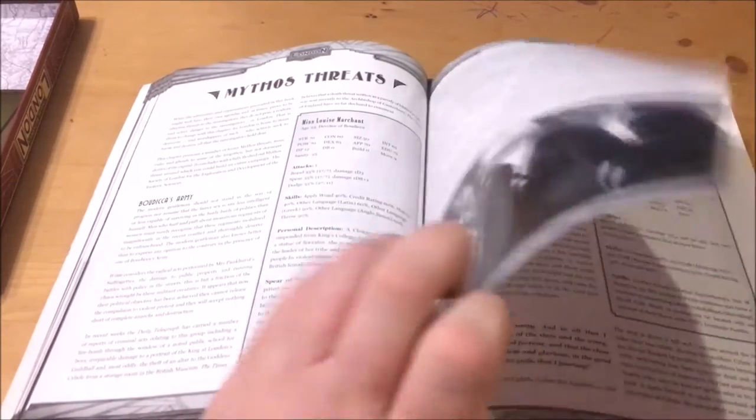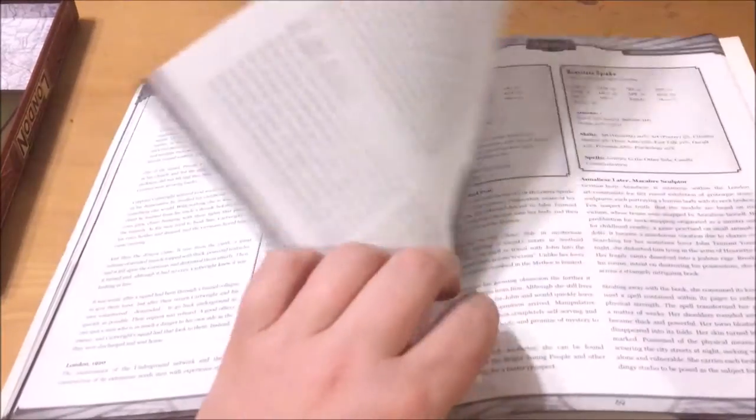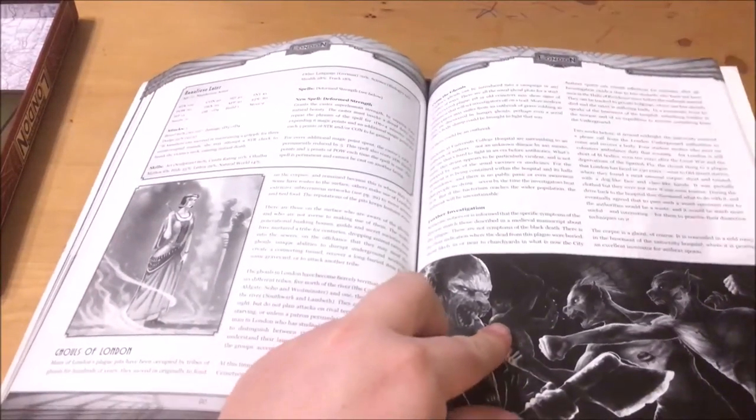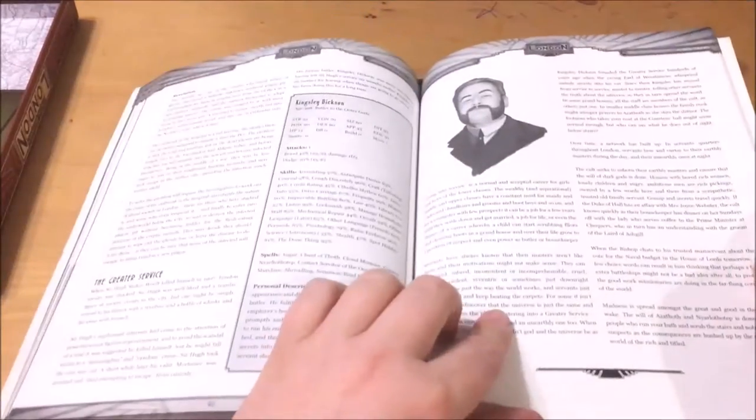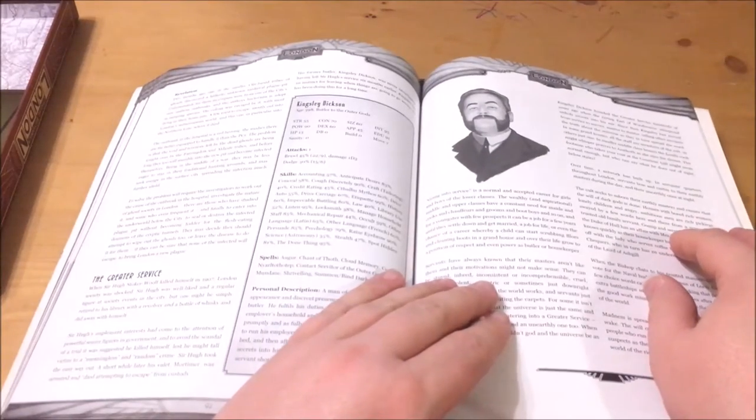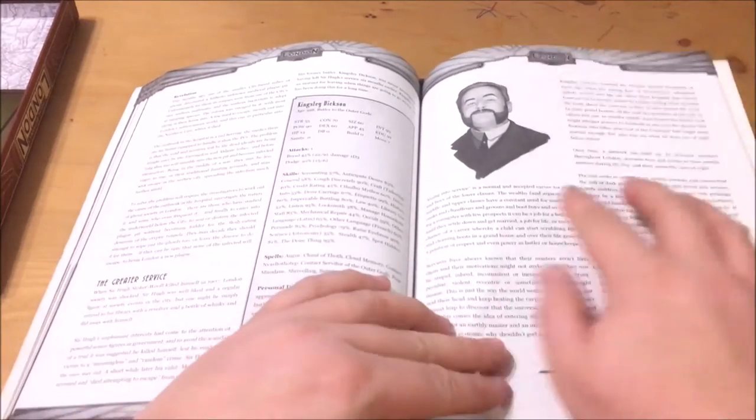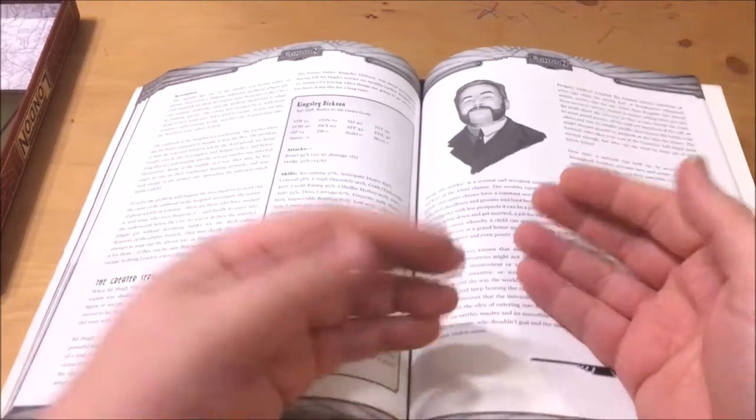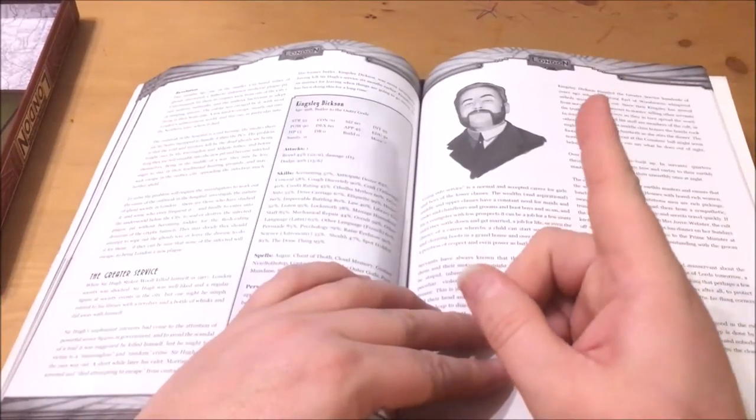The Ghouls of London which details the various tribes that dwell beneath and the Greater Service who seeks to influence the great and powerful by methods of insinuation and intimation which is led by a 390 year old butler who has such wonderful skills as Anticipate Desire, Raise Eyebrow and The Done Thing.